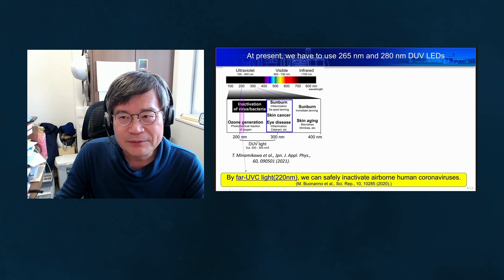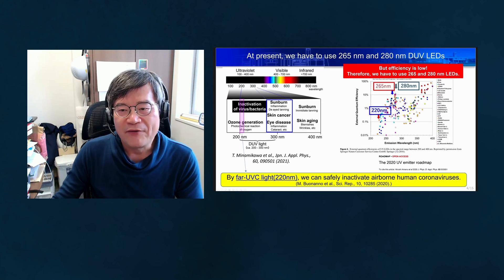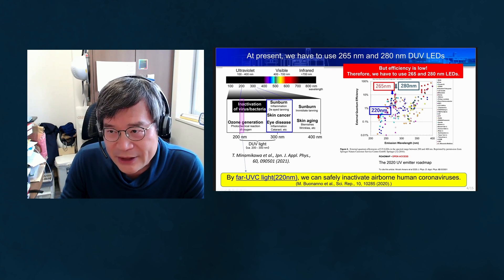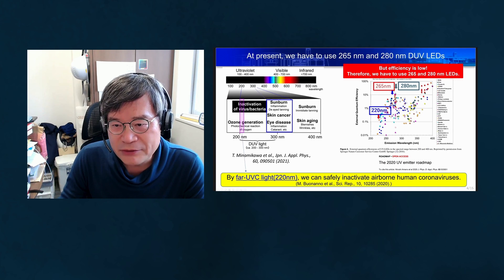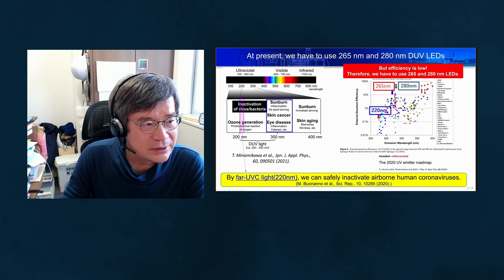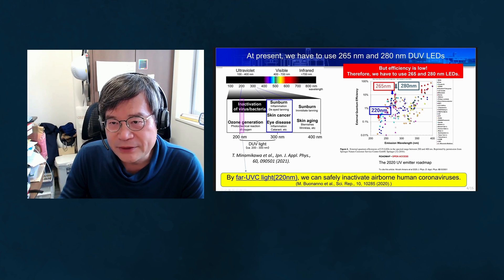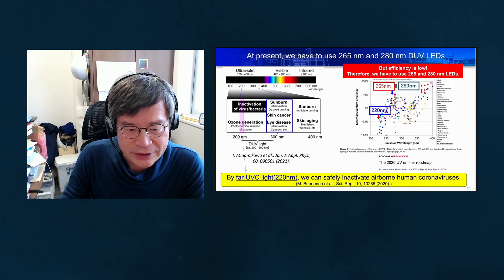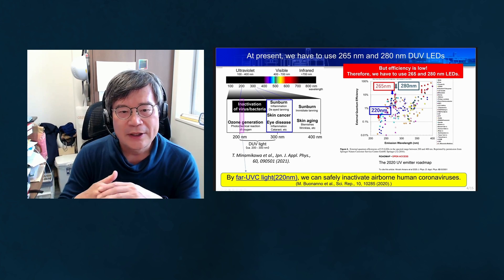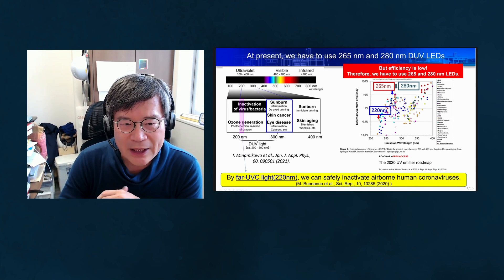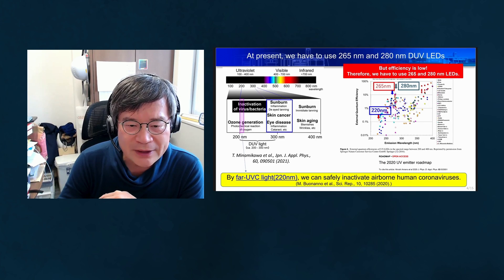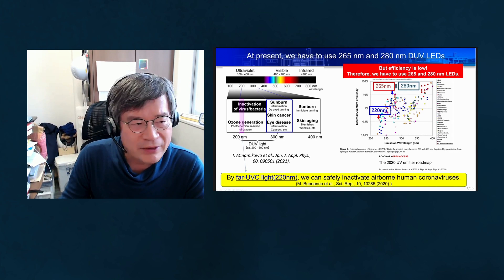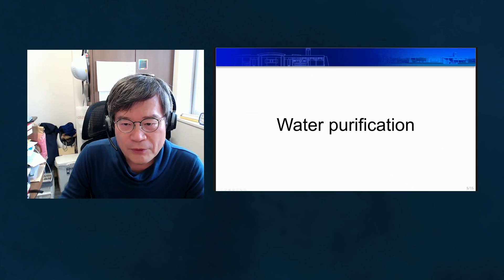But at present, the efficiency of 220 nanometer LEDs is very low. This is also on a logarithmic scale. So currently, we have to use 265 and 280 nanometer LEDs. Since this light affects human DNA, we have to cover the LED lamp for water purification.